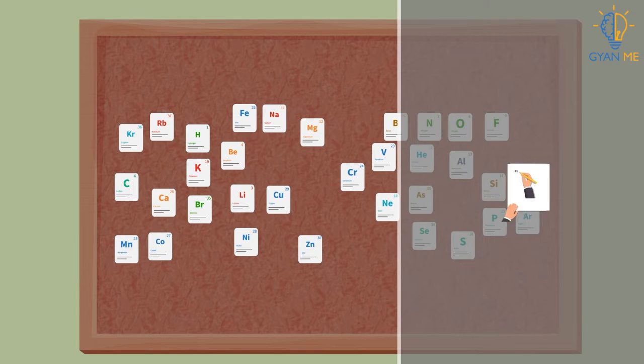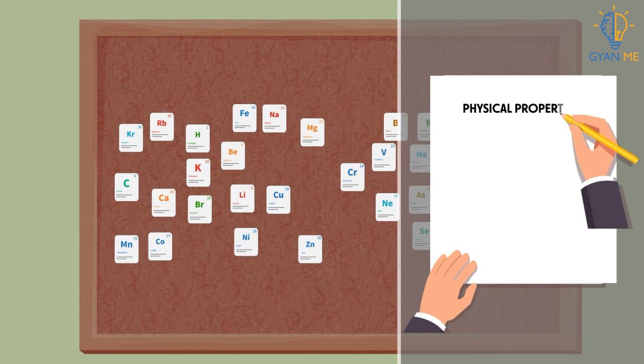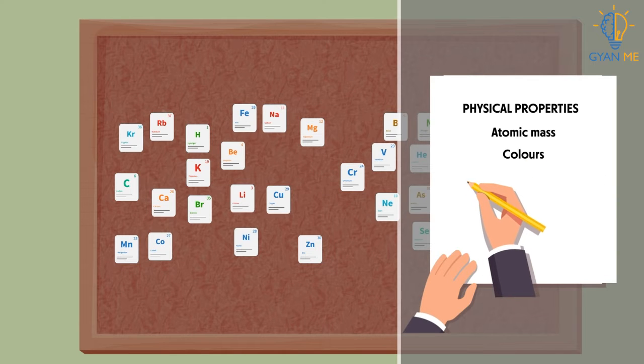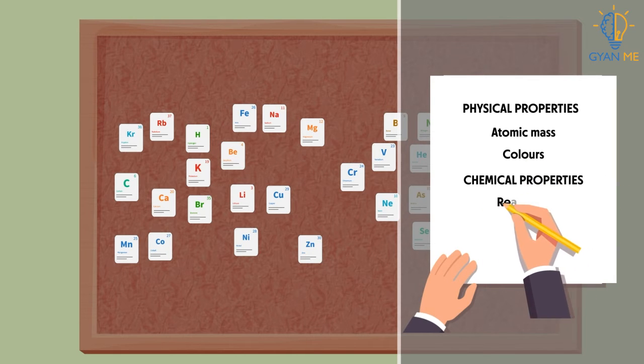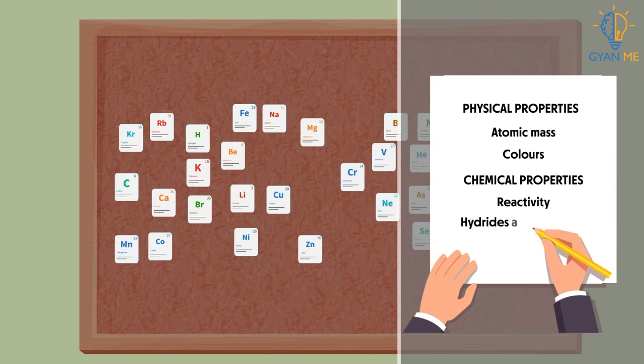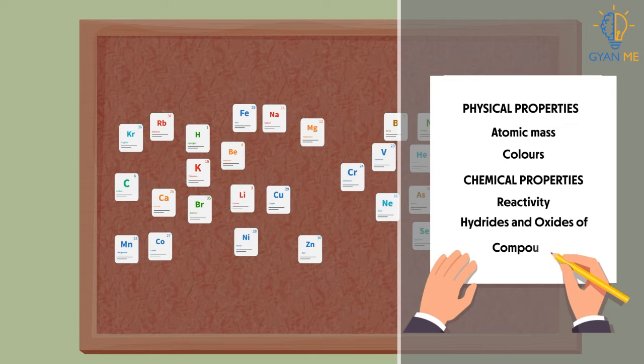On these cards, he wrote the physical properties like atomic mass, color, etc., and chemical properties of elements like their reactivity, i.e., whether they are reactive or highly reactive, and also the hydrides and oxides of these compounds.